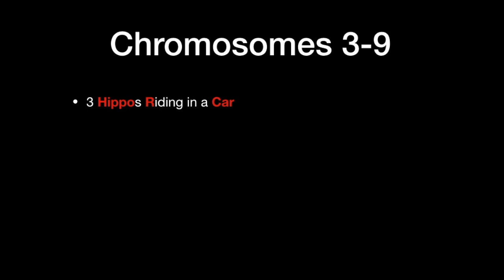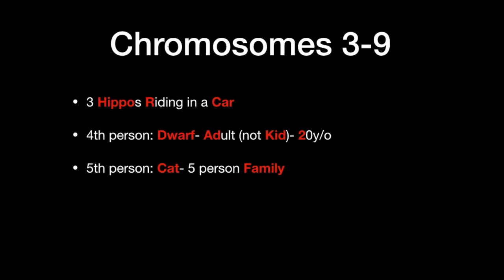So to start off, we have three hippos riding in a car. I've put in red and bold all of the important details — the letter R in 'riding' and 'car' are important things to take note of. Hippos obviously can't drive, so there's a fourth person — a dwarf — who is driving the car, and this dwarf is an adult. Kids can't drive, so it's not a kid; it's an adult, and he's 20 years old. The two in 20 is also important to remember. The fifth member in this scenario is a cat — making a five-person family. Another detail: the dwarf is ripped, so he has an iron-hard six pack.